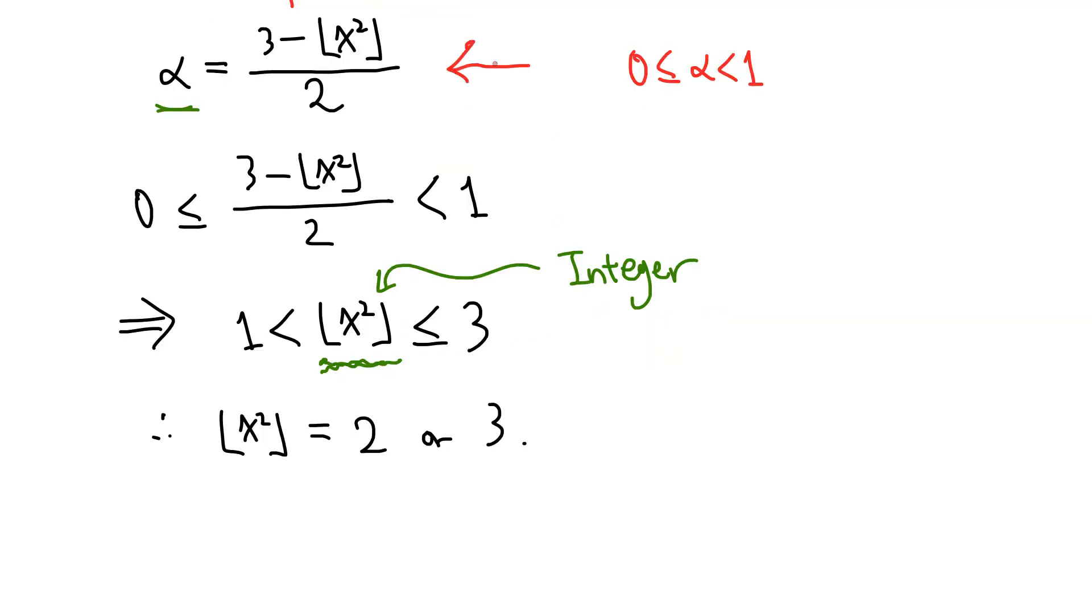And let's take a look at this equation. If we know floor x squared, we can calculate alpha from here. For the pair of floor x squared and alpha, when floor x squared equals 2, this equation gives alpha equals 1 over 2. And when floor x squared equals 3, this equation gives alpha equals 0.